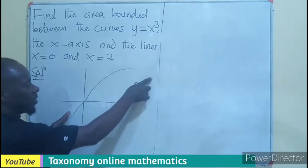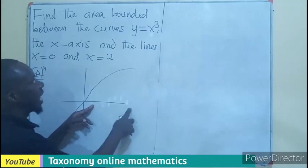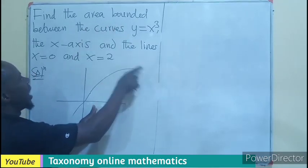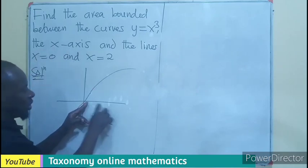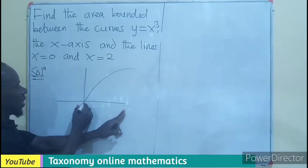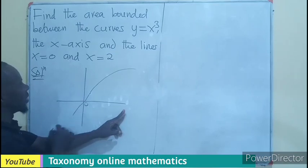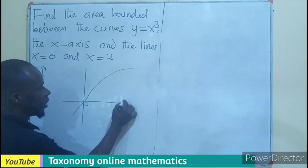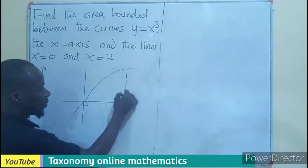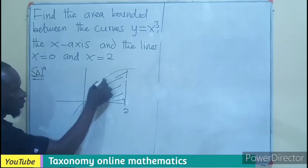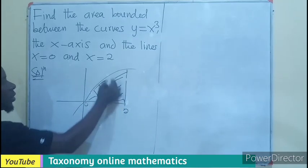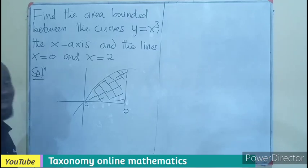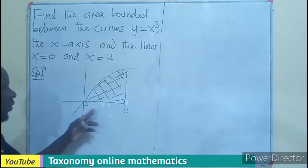Then this curve and the x-axis - the area bounded by the curve which is this, the x-axis which is this, and the line x equals 0 which is the first point here. Then x equals what? 2. So if I put 2 here, this area is bounded by the curve and the x-axis with the limits from 0 to 2.